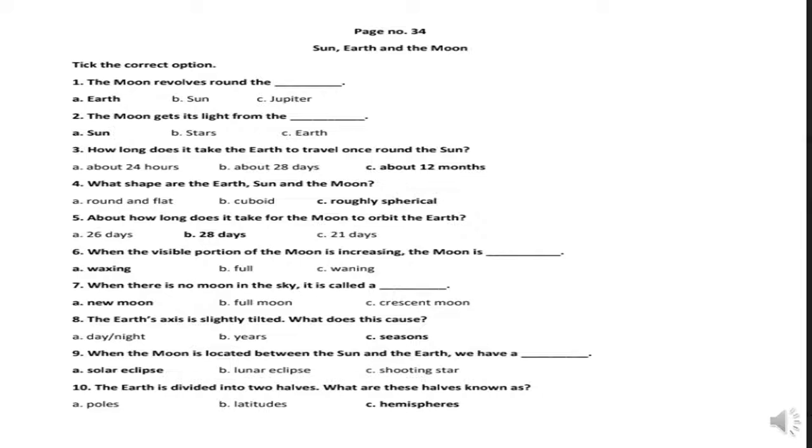Let us begin with page number 34. On this page we have some empty cues. The heading is 'Tick the correct option.' The very first question is: the moon revolves round the dash — and your options are Earth, Sun, Jupiter. Your answer will be Earth. The moon revolves round the Earth.